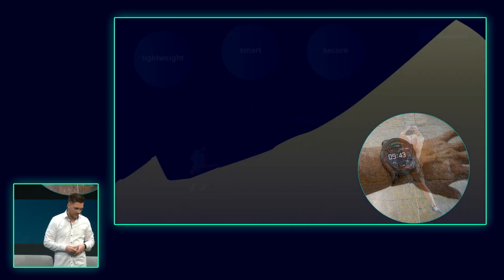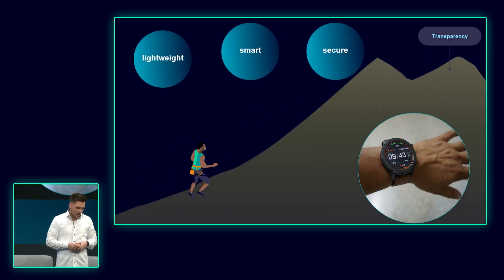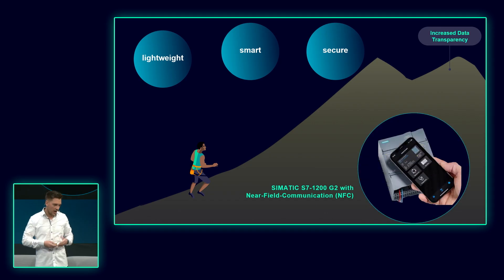Next stop: transparency. On your way to the top, you might want to know where you are and how fast you have to go and what are the conditions. For that you might have a smartwatch on your wrist to have access to this kind of data. You want that to be lightweight, you want that to be smart, and you want it to be secure since it's also referring to some kind of personal data. How do you realize something similar in a machine? The answer is: use near-field communication on the new SIMATIC S7-1200 G2.